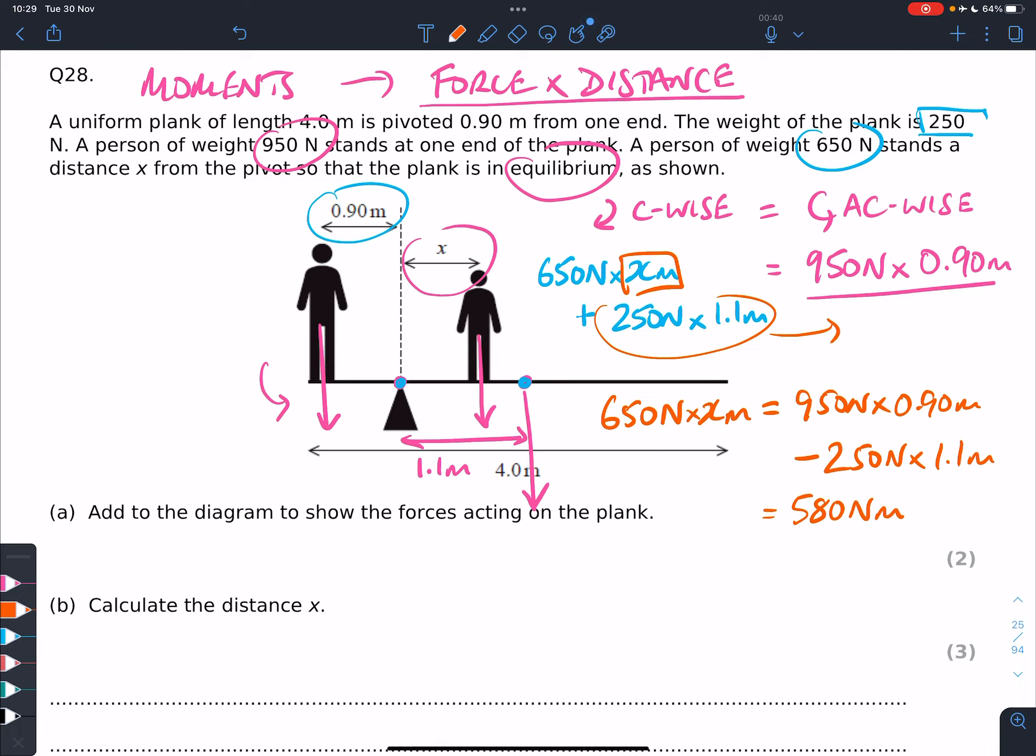And so now we can say that x metres is equal to 580 newton metres divided by 650 newtons. And you'll see, obviously, in this case, that newtons cancel out, which means that we're going to have our answer in metres, which is what we want.